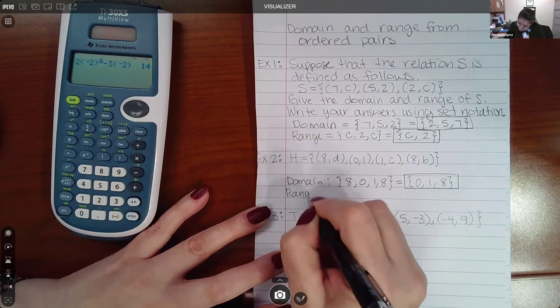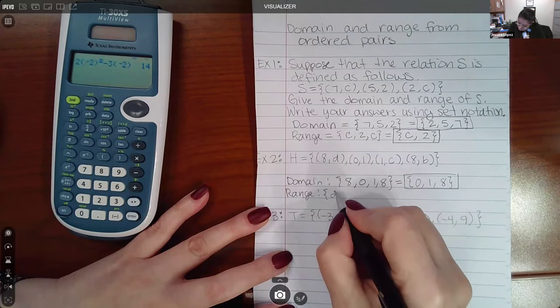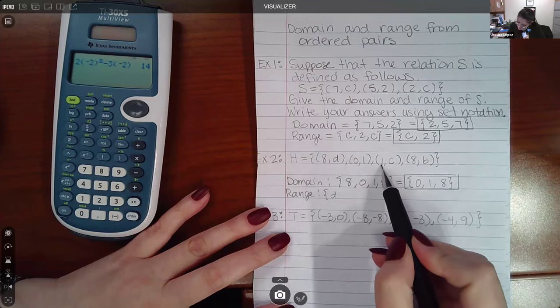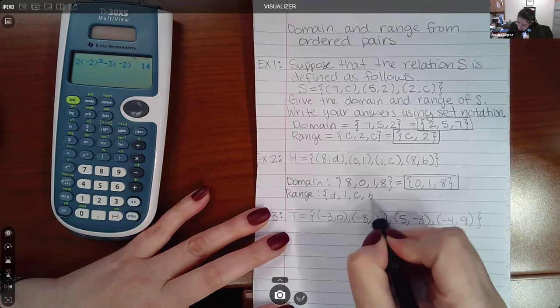Now for the range, those are the Y coordinates. So I have - oh, I made a mistake. No, I didn't - eight, zero, one, eight. Second coordinates: D, one, C, and B.